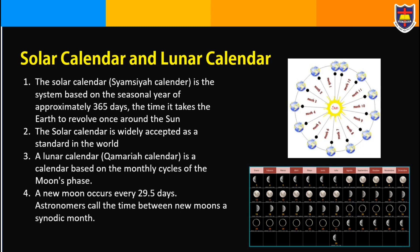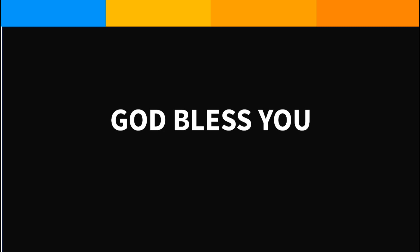A new moon occurs every 29.5 days; astronomers call the time between new moons a synodic month. If we count one month as 29.5 days multiplied by 12 months, the total is 354 days. So a year on the lunar calendar has 354 days. That's enough for today — thank you for your attention. God bless you.